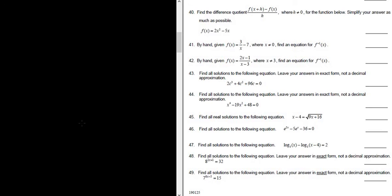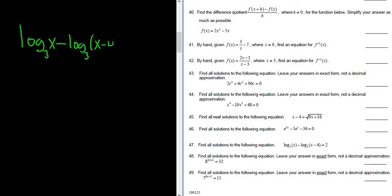Let's do problem number 47. Find all solutions to the following equation. We have log base 3 of x minus log base 3 of x minus 4, and that's equal to 2.